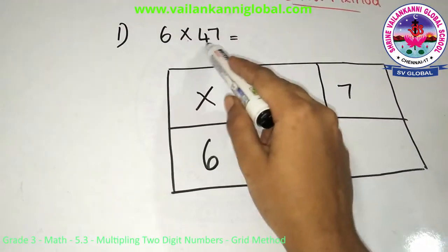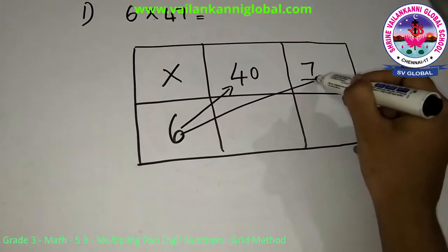I will write 6 here. Multiplication goes here. And I will split this 47 as 40 and 7. So now what I will do is, I will multiply this 6 with 40 and also with 7.